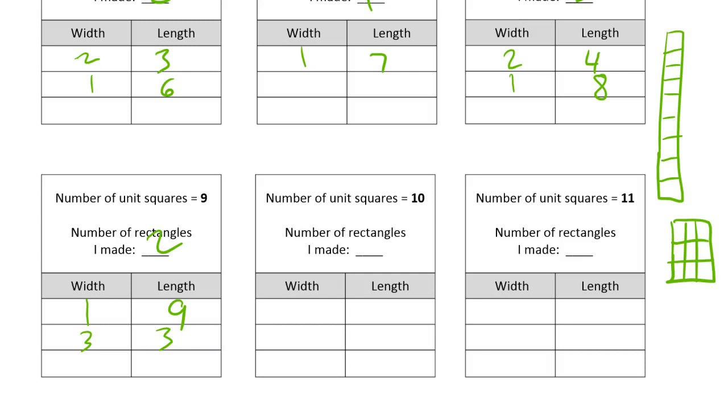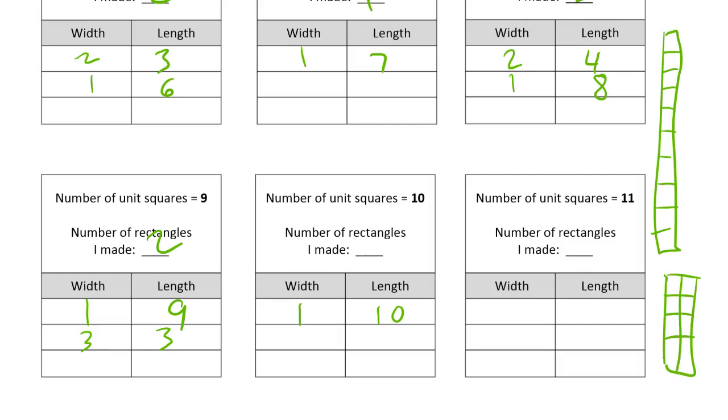And then for ten, of course there's one by ten. And for two, you can have rows of two. We get a ten frame. Two by five. And that's it. Two rectangles.